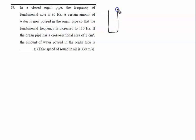In a closed organ pipe, the frequency of the fundamental note is 30 Hz. The fundamental frequency has an antinode here and a node here.